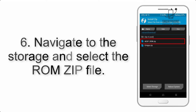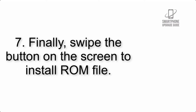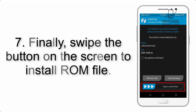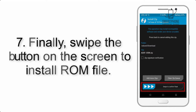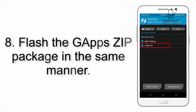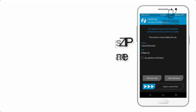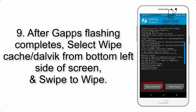Step 6: Navigate to the storage and select the ROM zip file. Step 7: Finally, swipe the button on the screen to install the ROM file. Step 8: Flash the GApps zip package in the same manner.